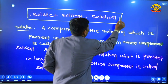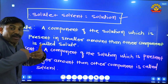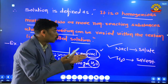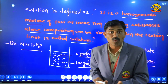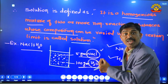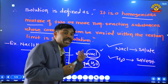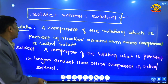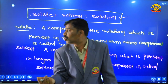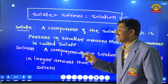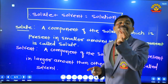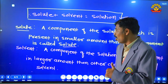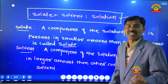Is solution mein do prakar ke components hain: ek sodium chloride jise hum solute kehte hain, aur doosra water jise hum solvent yaani medium kehte hain. Solute aur solvent jab dono mix ho jaate hain toh solution banta hai. Solute woh component hota hai — a component of the solution which is present in a smaller amount than the other component is known as solute.